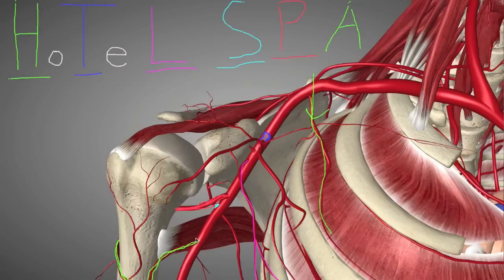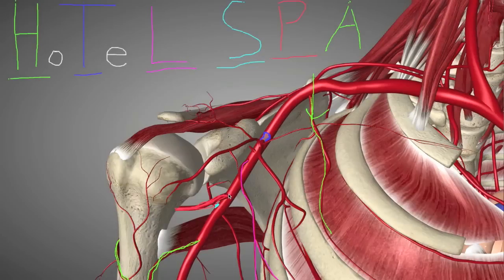Another tip to tell these apart: in the body, the Posterior Humeral Circumflex Artery is usually a little bit thicker than the Anterior Humeral Circumflex Artery. Normally they exit really close together and wrap around the humeral neck. Sometimes they even exit as one structure that splits into two, but that's not textbook. In most cadavers you see a separate posterior and anterior humeral circumflex artery wrapping around the humeral neck.